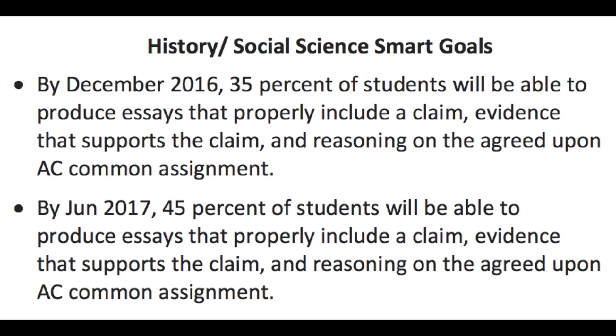Now we are going to review some of our SMART goals that we decided upon at our last PLUS meeting. Our first SMART goal is that by December 2016, 35% of our students will be able to produce writing that properly includes a claim, evidence that supports the claim, and reasoning on the agreed upon AC common assignments. With the hopes that by the end of June 2017, 45% of students will also be able to produce writing that properly includes a claim, evidence, and reasoning on those assignments.